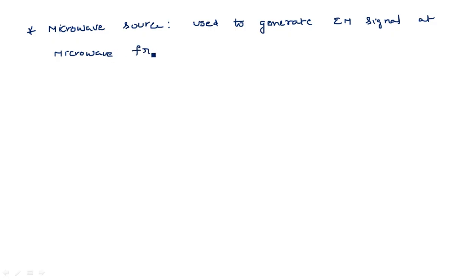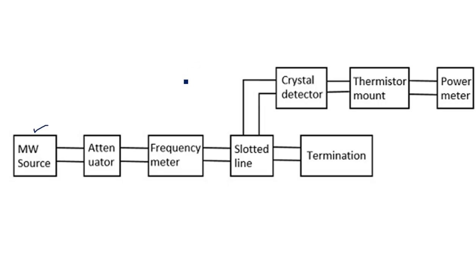The microwave source generates a signal at microwave frequencies — that is why we call it a microwave source. A source is a device used to produce the signal. Immediately after the microwave source, we connect an isolator. Before the attenuator, we connect the isolator.